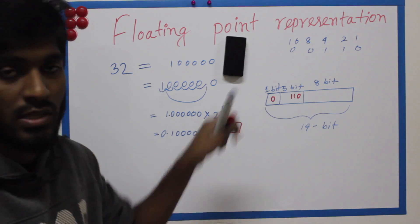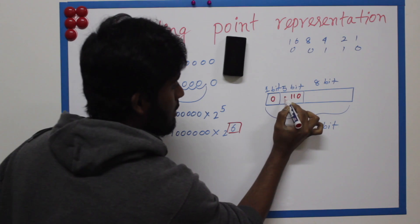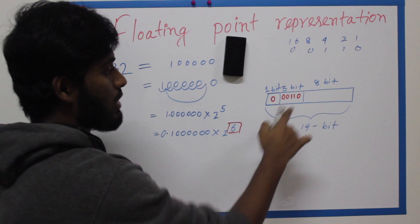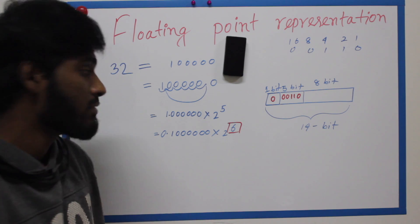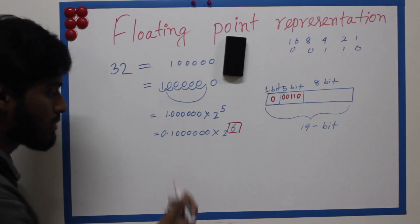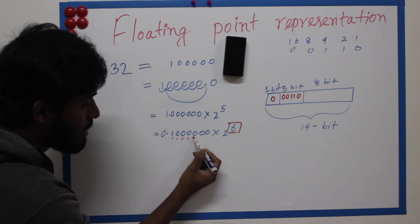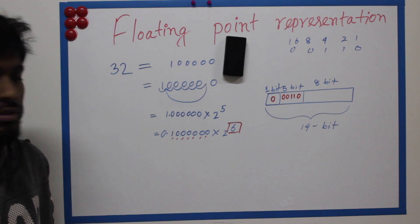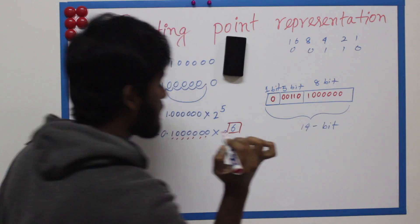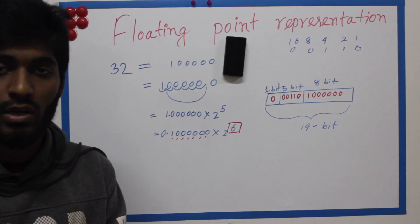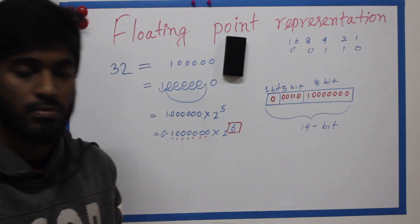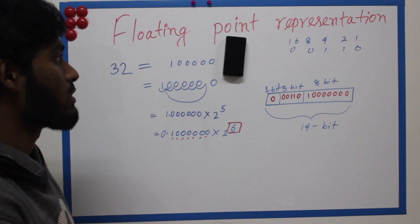We have 5 bits for the exponent. The last part is 8 bits for the significant. The significant comes from 0.1 in binary — that is 1, followed by zeros: 1, 0, 0, 0, 0, 0, 0. You fill up the remaining bits with zeros. So this is the basic floating point representation.